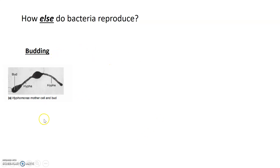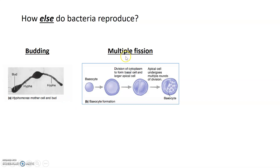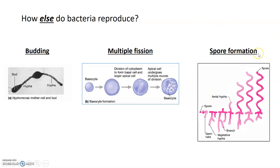Bacteria can also use other methods of reproduction. The first is budding, specific to bacteria that contain stalks or hyphae — they can grow new buds at the end of these stalks. There's also multiple fission, where one cell becomes many cells in a single process; these smaller cells are known as biocytes. Bacteria can also form spores to reproduce. All of these methods are asexual, and the method of reproduction is intrinsic to the species — each species has its own method, with binary fission being the most common.